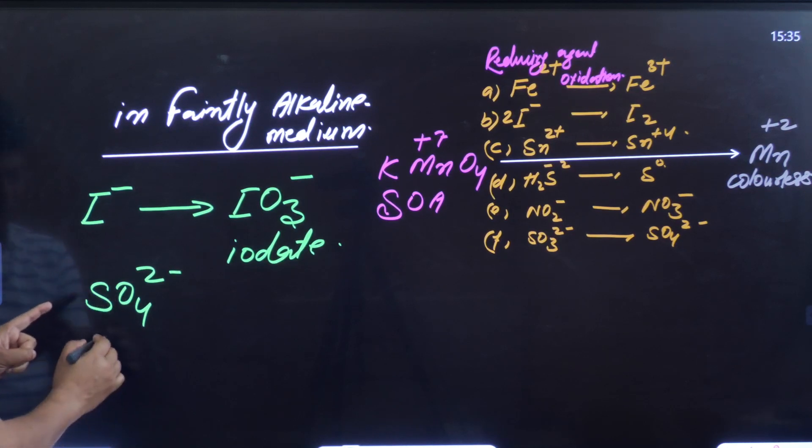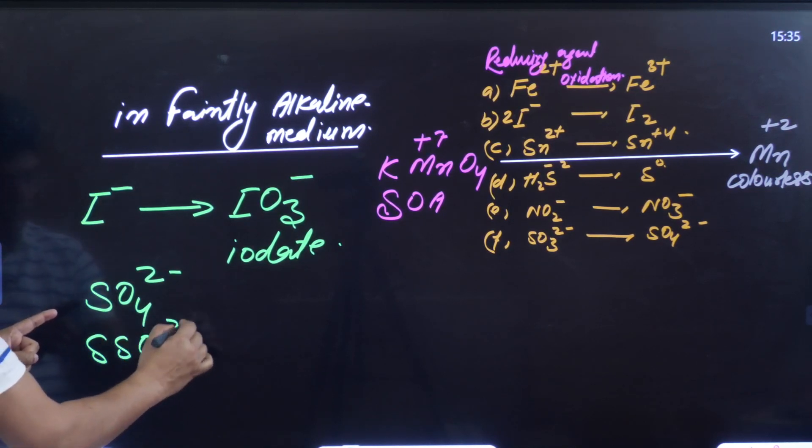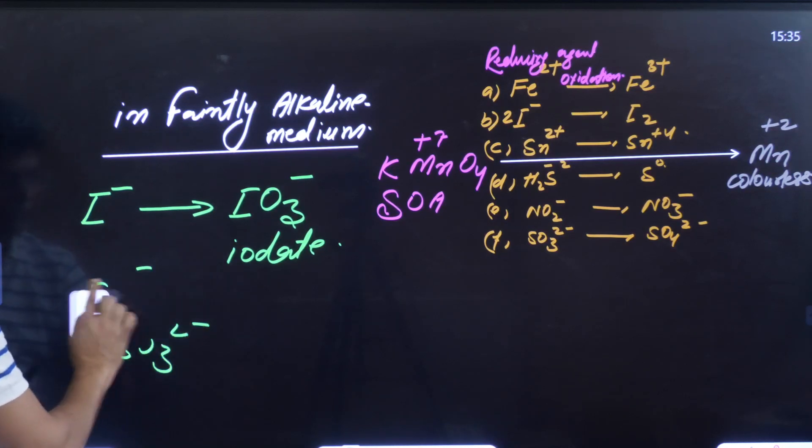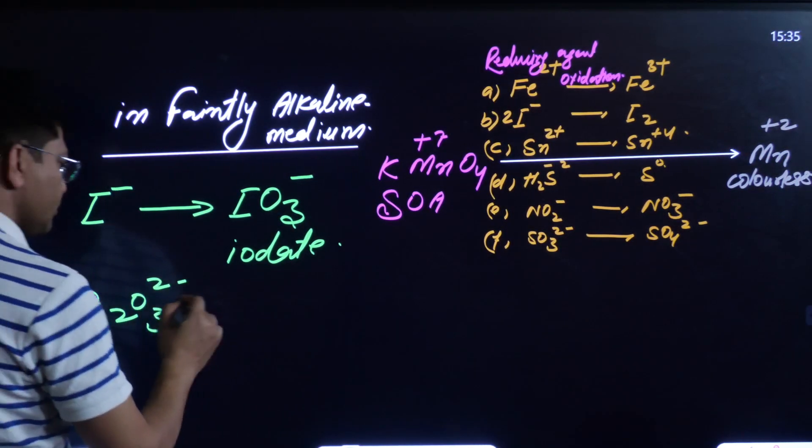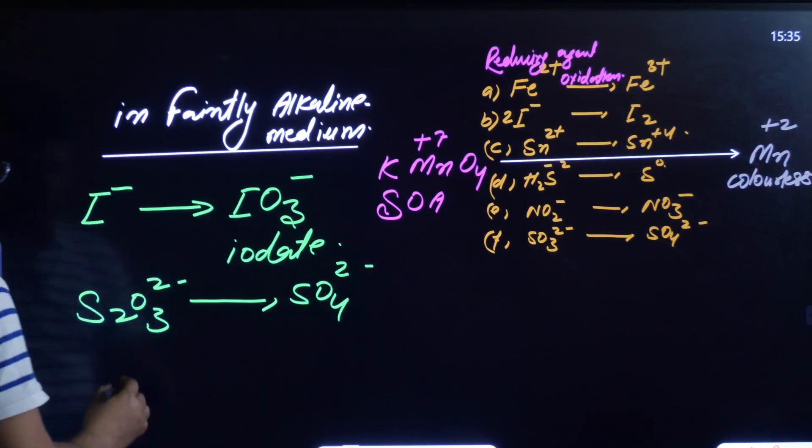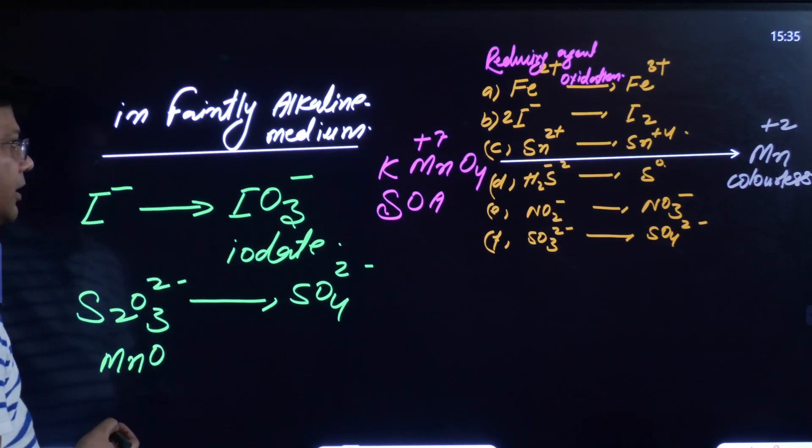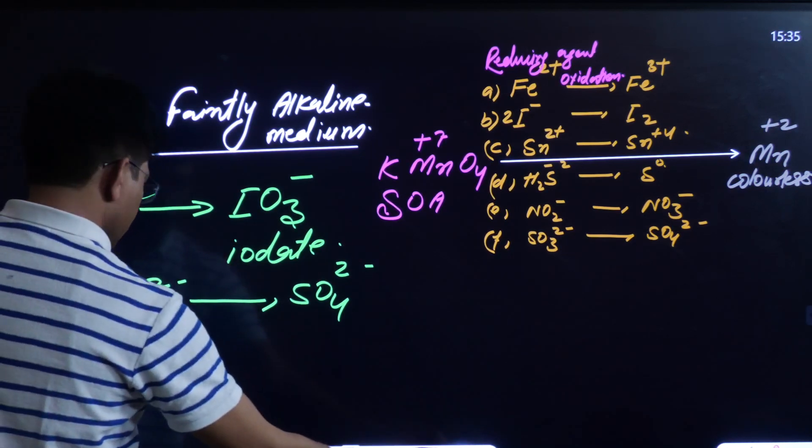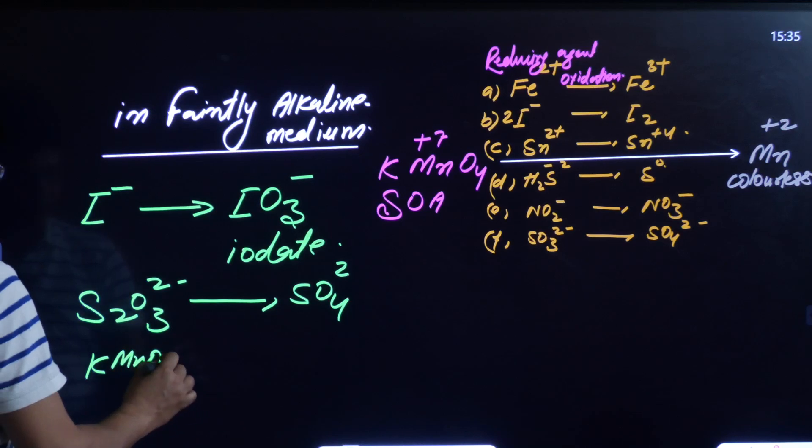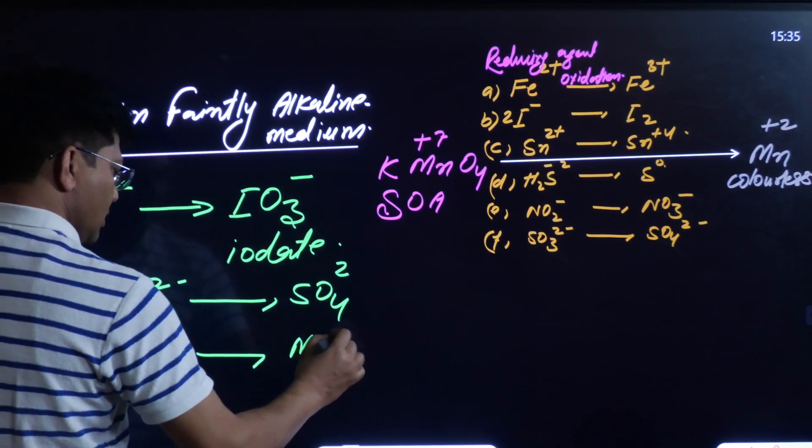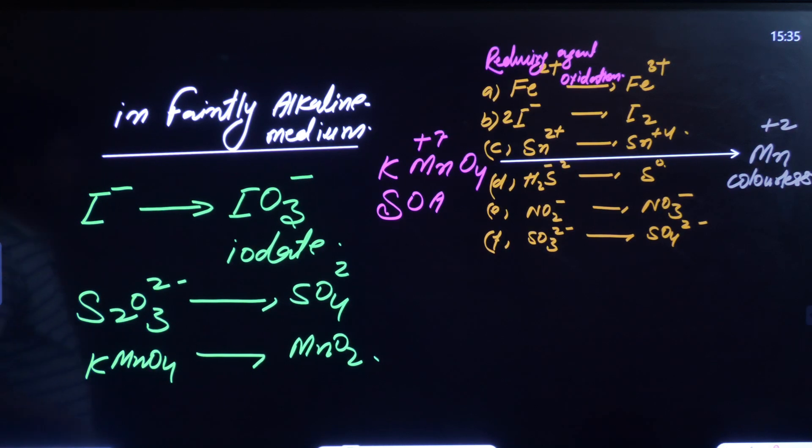S₂O₃²⁻ thiosulfate gets oxidized to sulfate. And if MnO₂ gets KMnO4 in neutral medium, MnO₄⁻ will change into MnO₂. So all these reactions are really very important, my dear students.